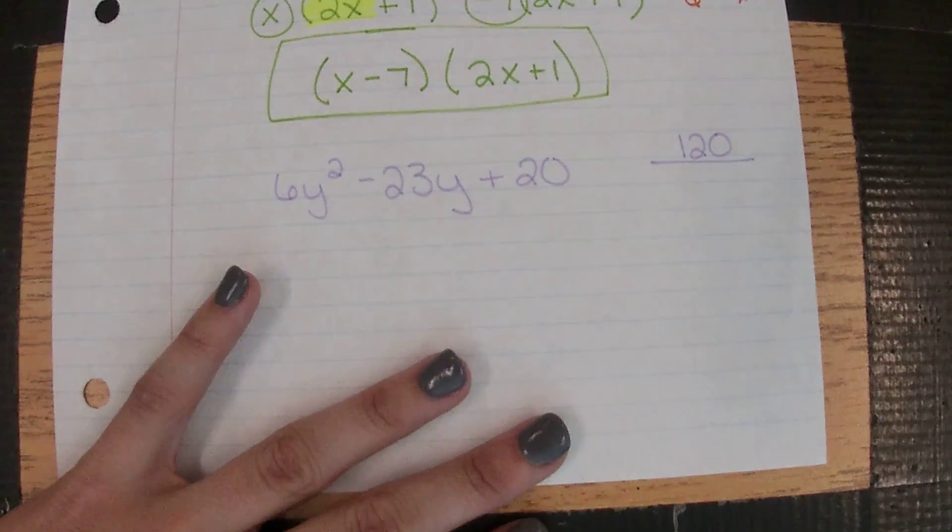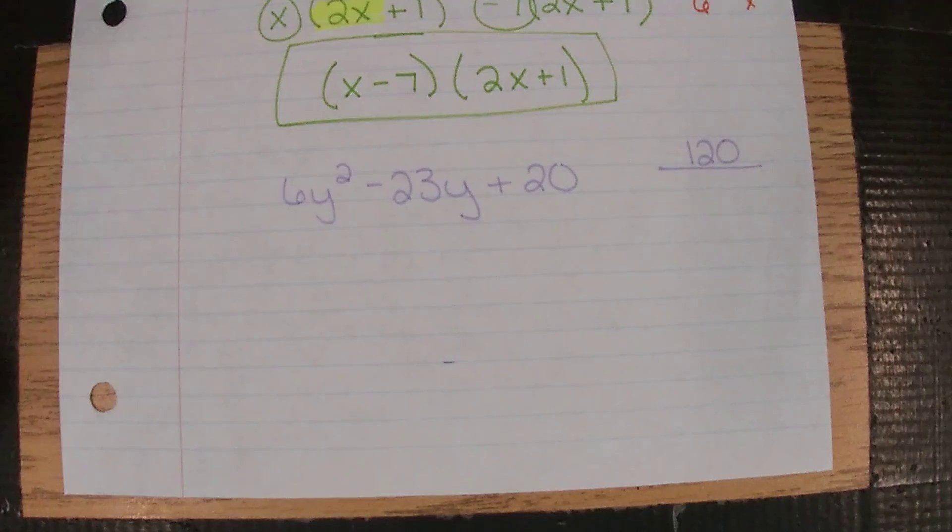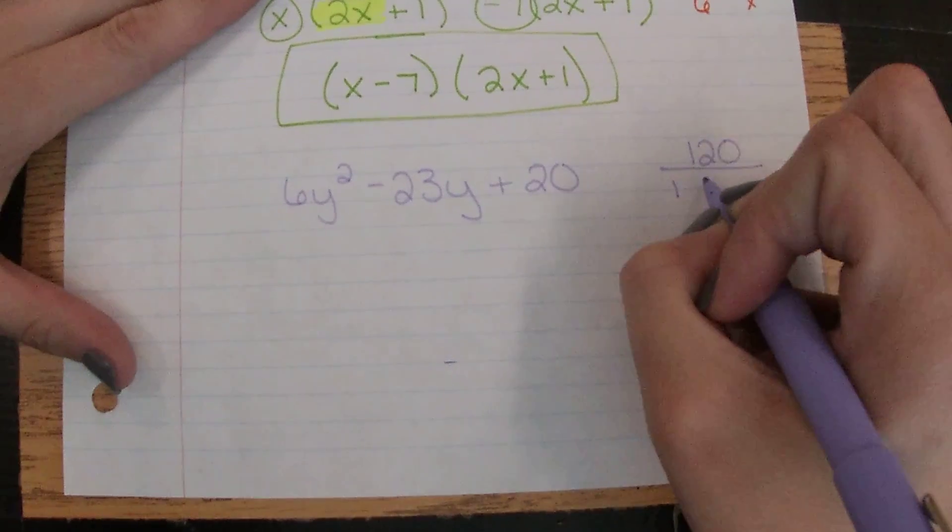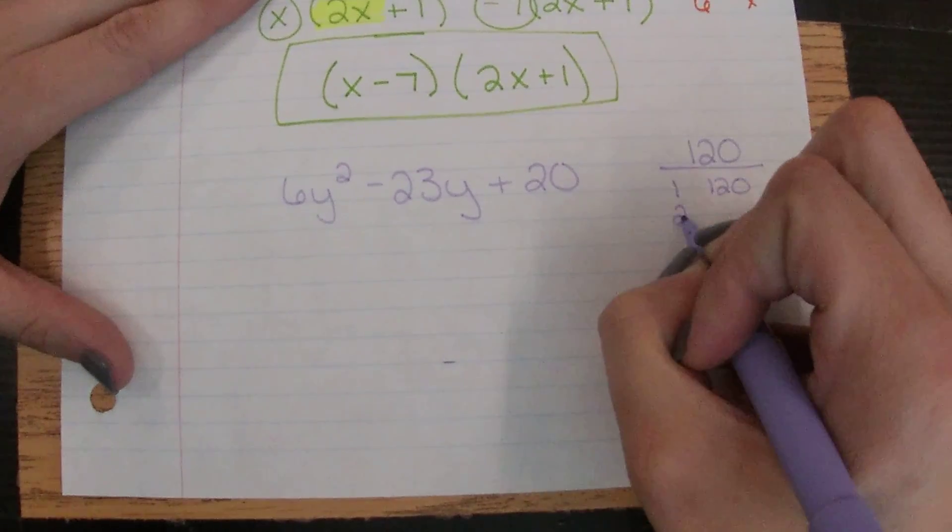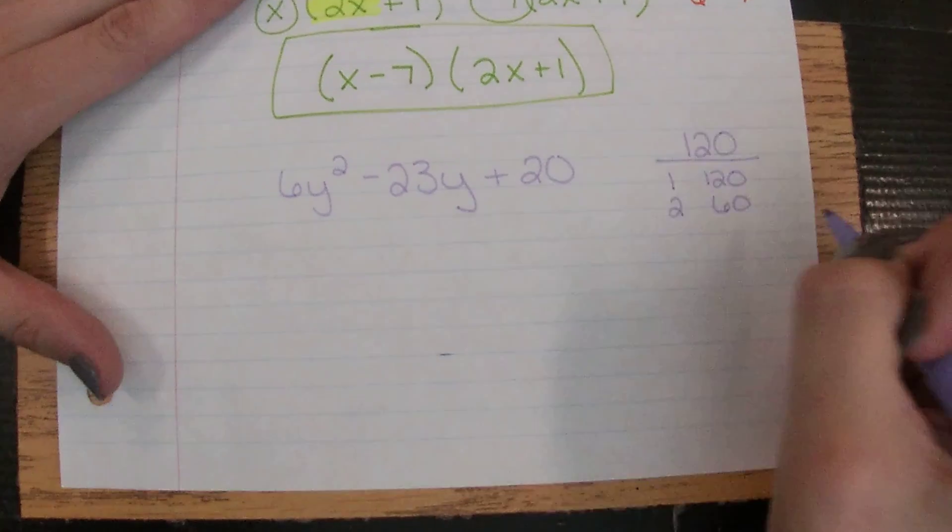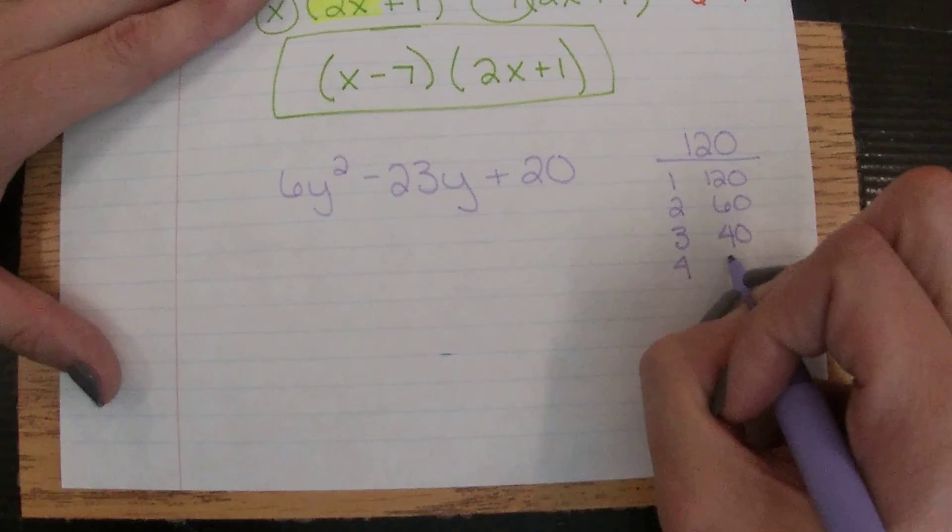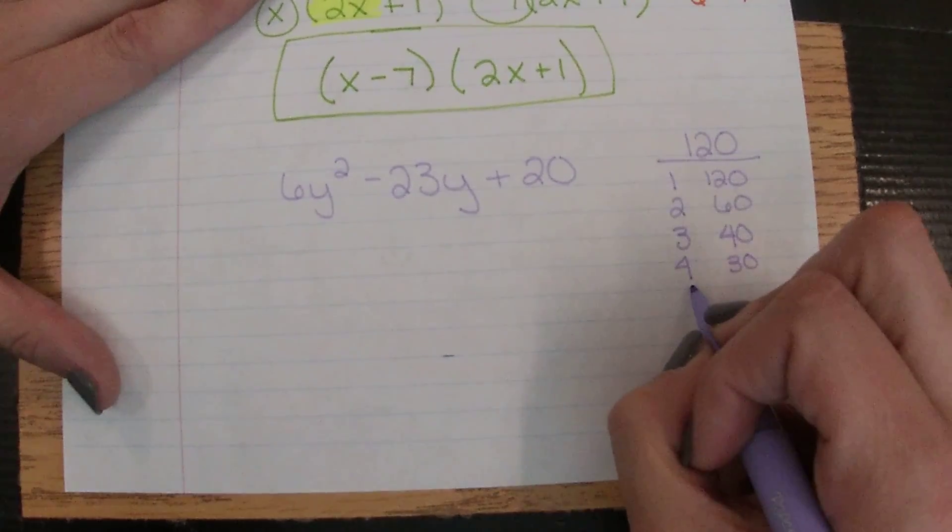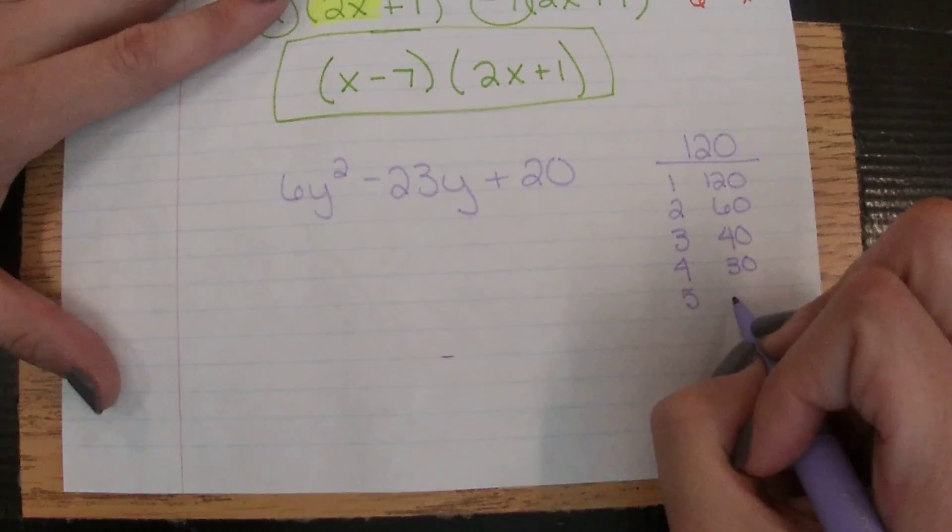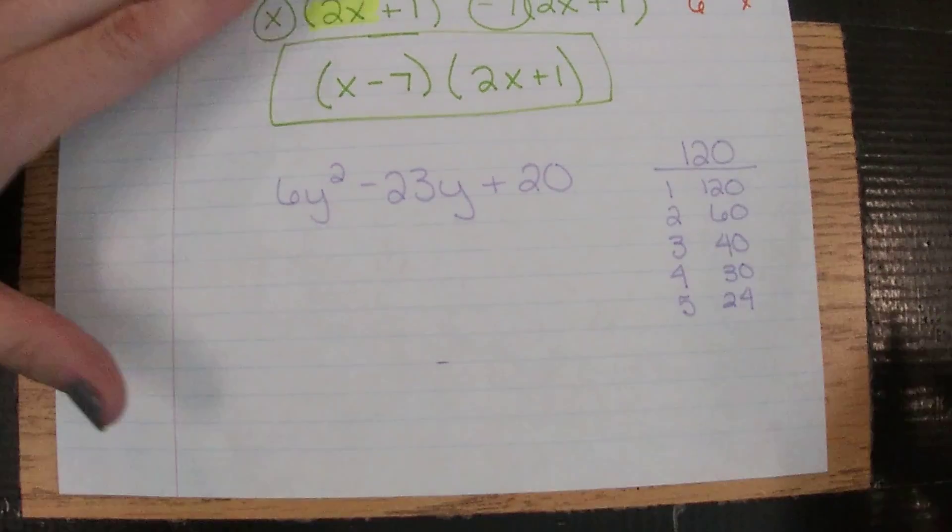So to start, we're going to multiply a times c, so 6 times 20 gives us 120. Now we're going to have to make a list here, which is why it's important that we stick to our process. So we're going to try 1, try 2. Use a calculator if you need to. 120 divided by 3, your calculator will tell you 40. 120 divided by 4, you'll get 30, 5 and 24.